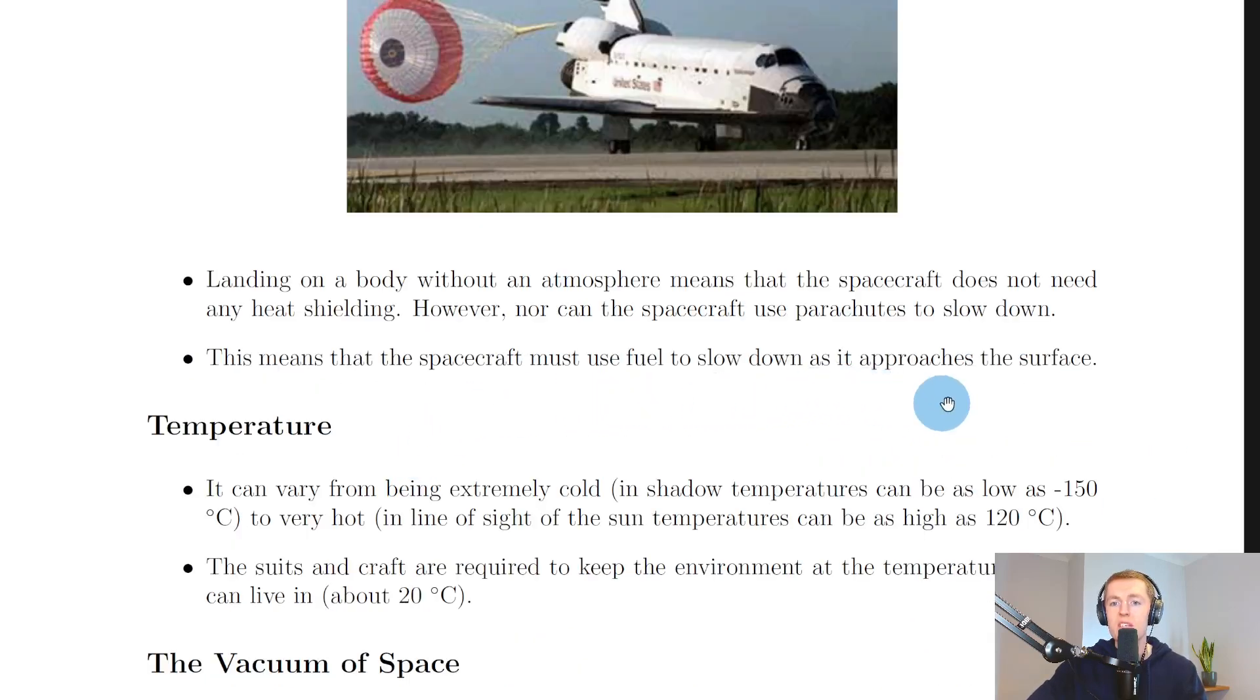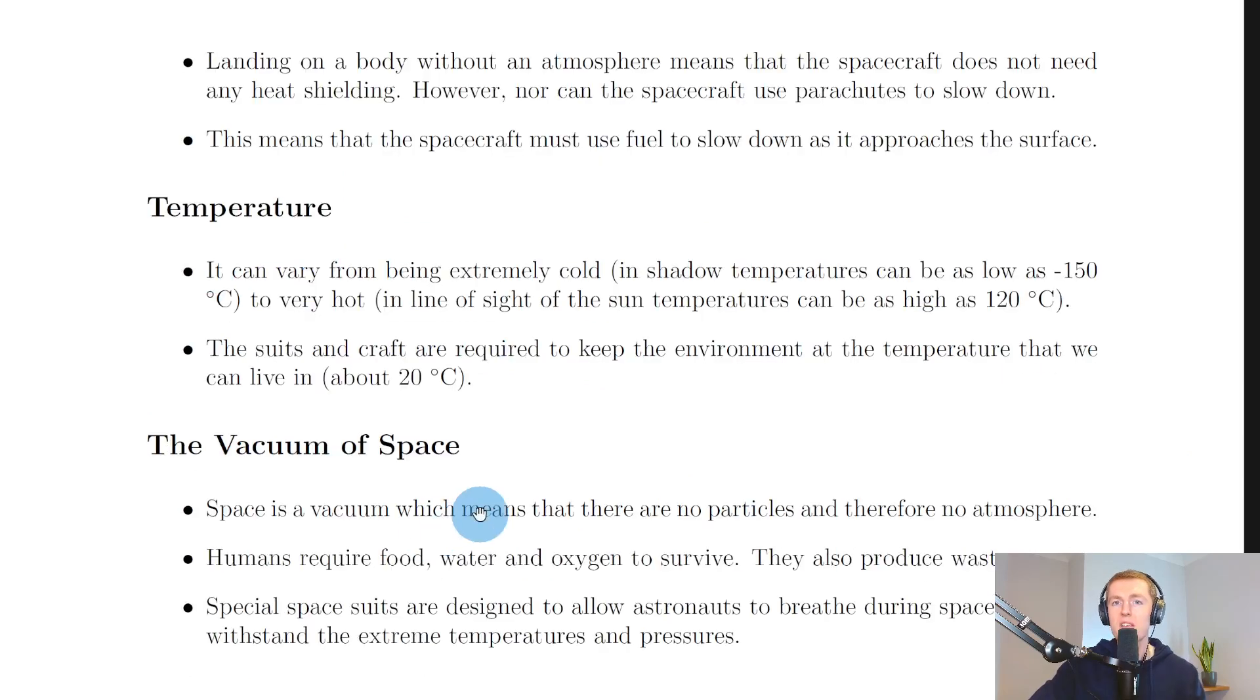Another risk of space exploration would be temperature. It can vary from being extremely cold in shadow—temperatures can be as low as minus 150 degrees Celsius—to very hot in line of sight of the sun, where temperatures can be as high as 120 degrees Celsius. Because of these extreme temperatures, the suits and craft are required to keep the environment at the temperature that we can live in, about 20 degrees Celsius or room temperature. That's especially important if astronauts are going to leave the space station and do spacewalks.